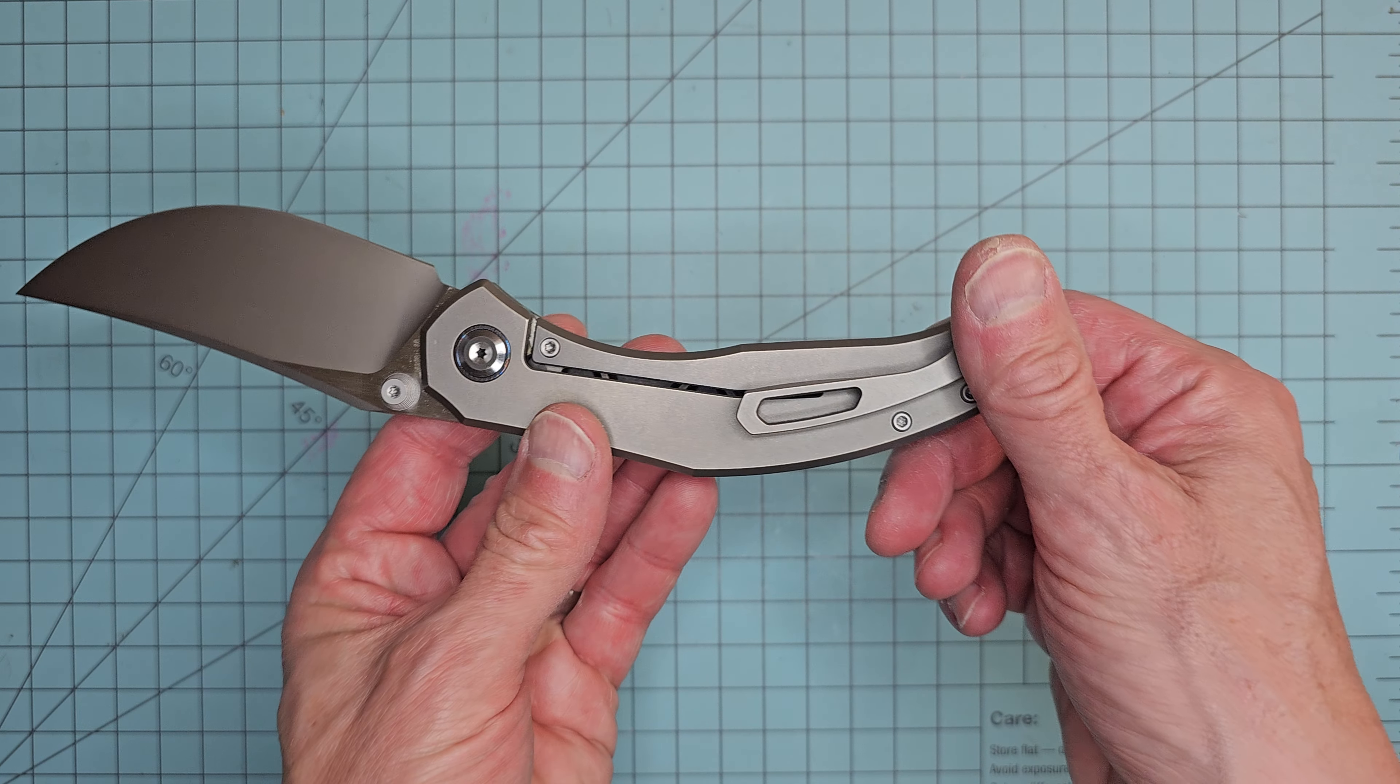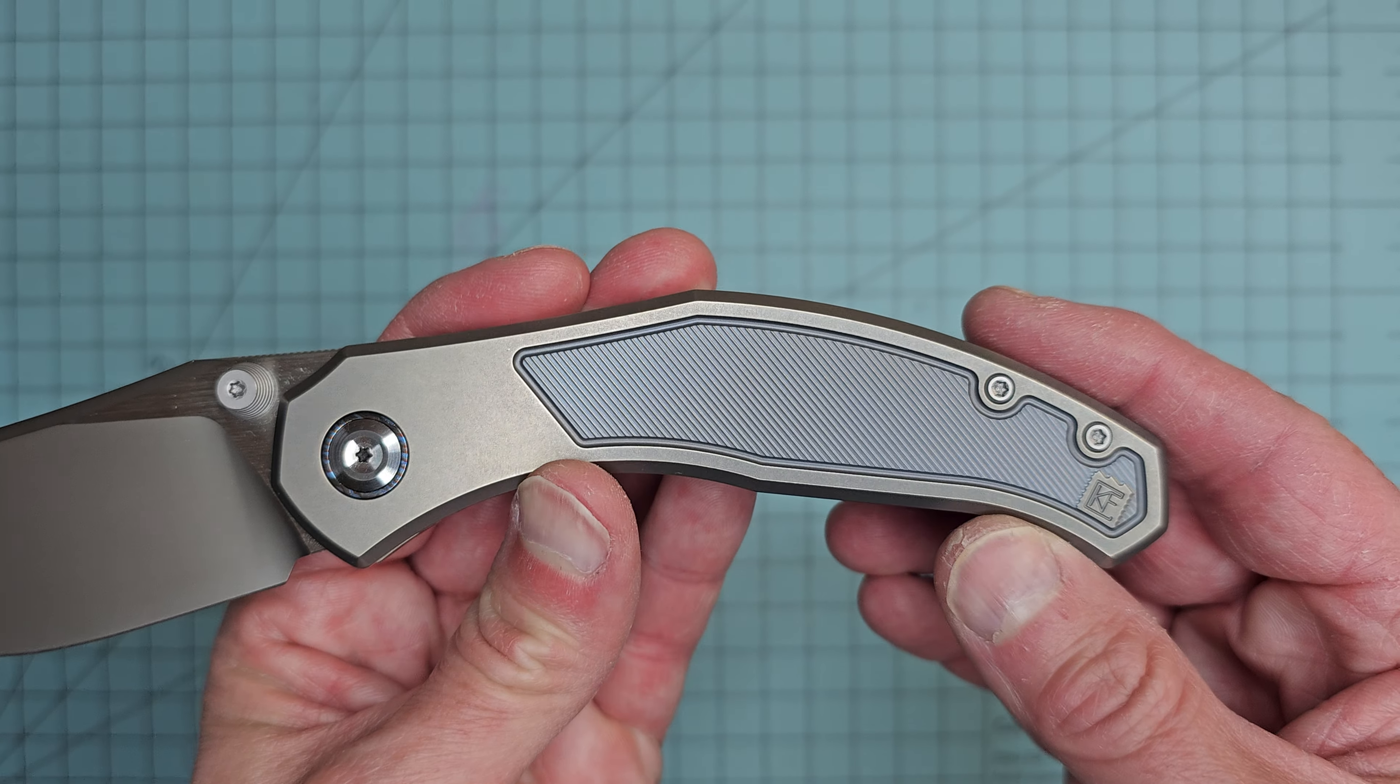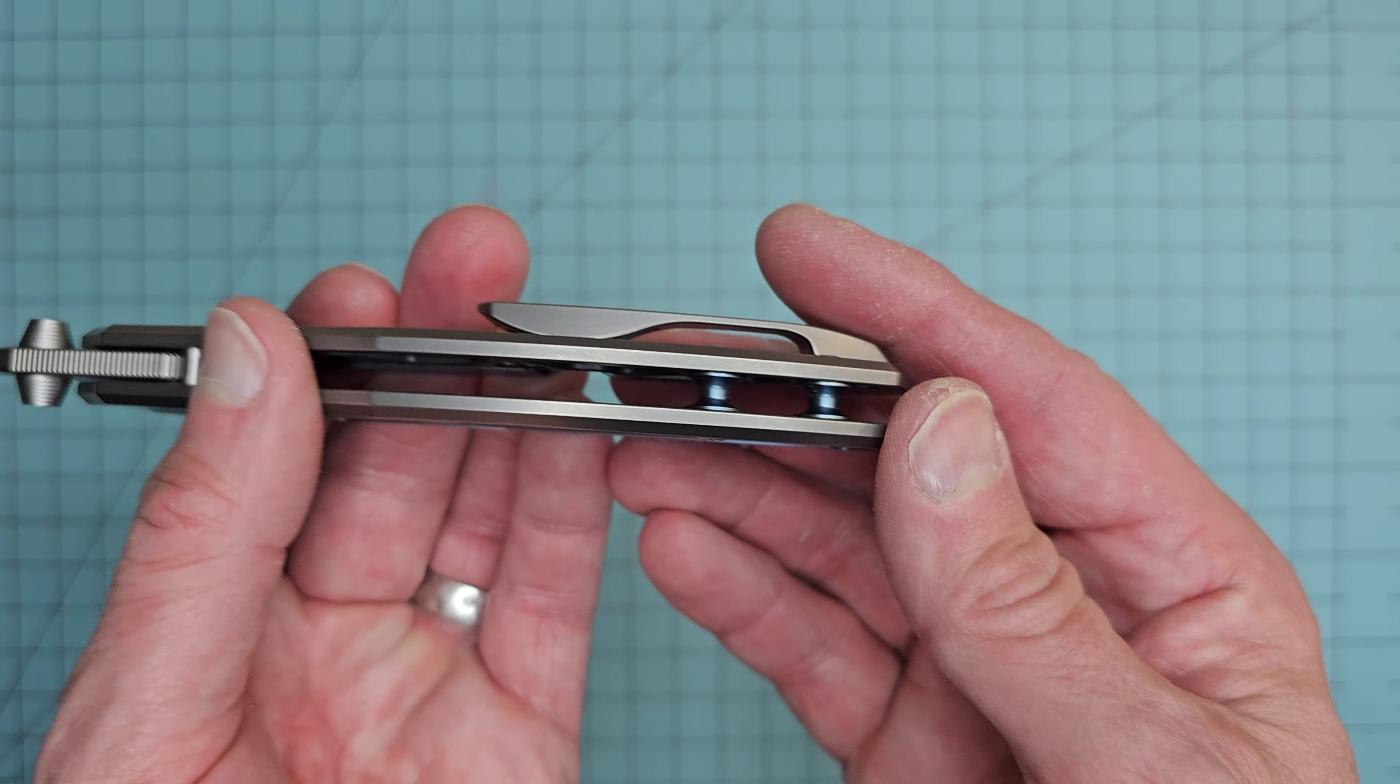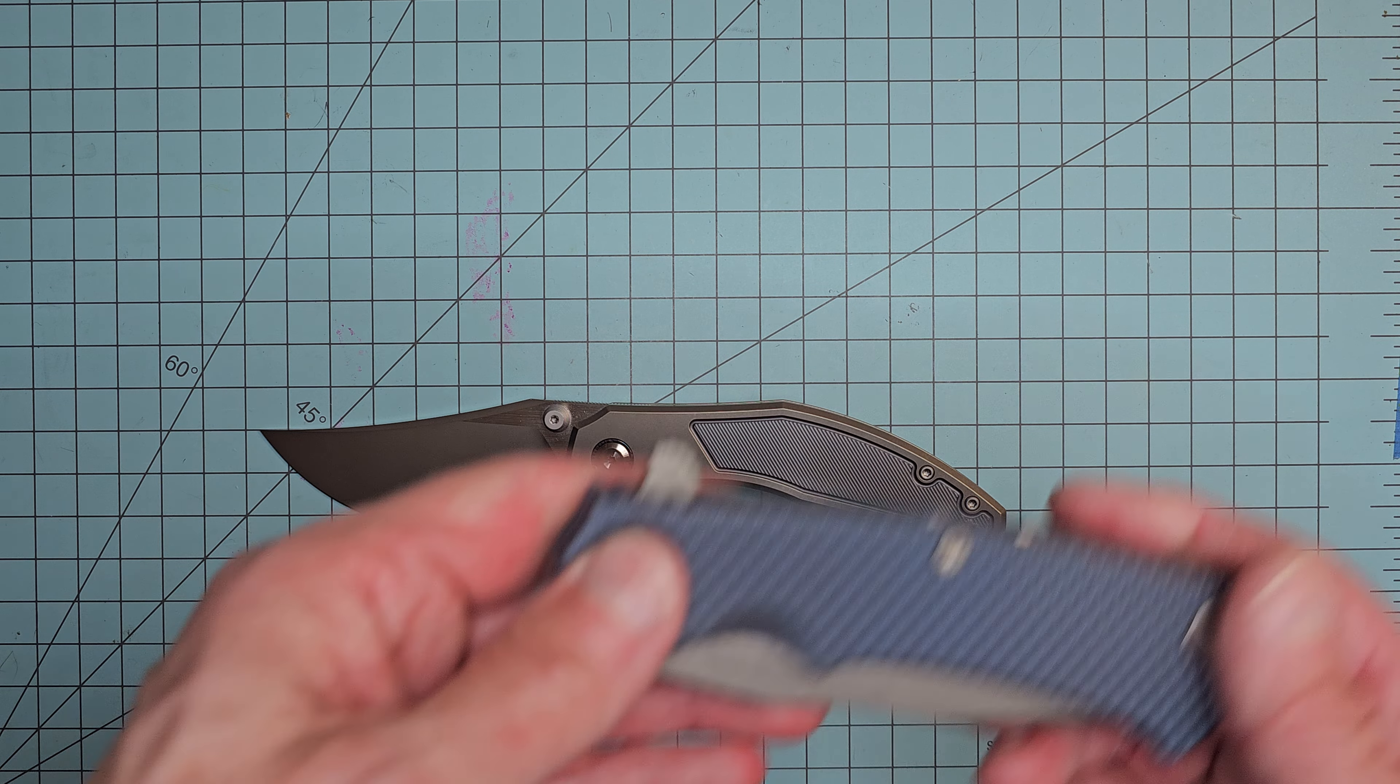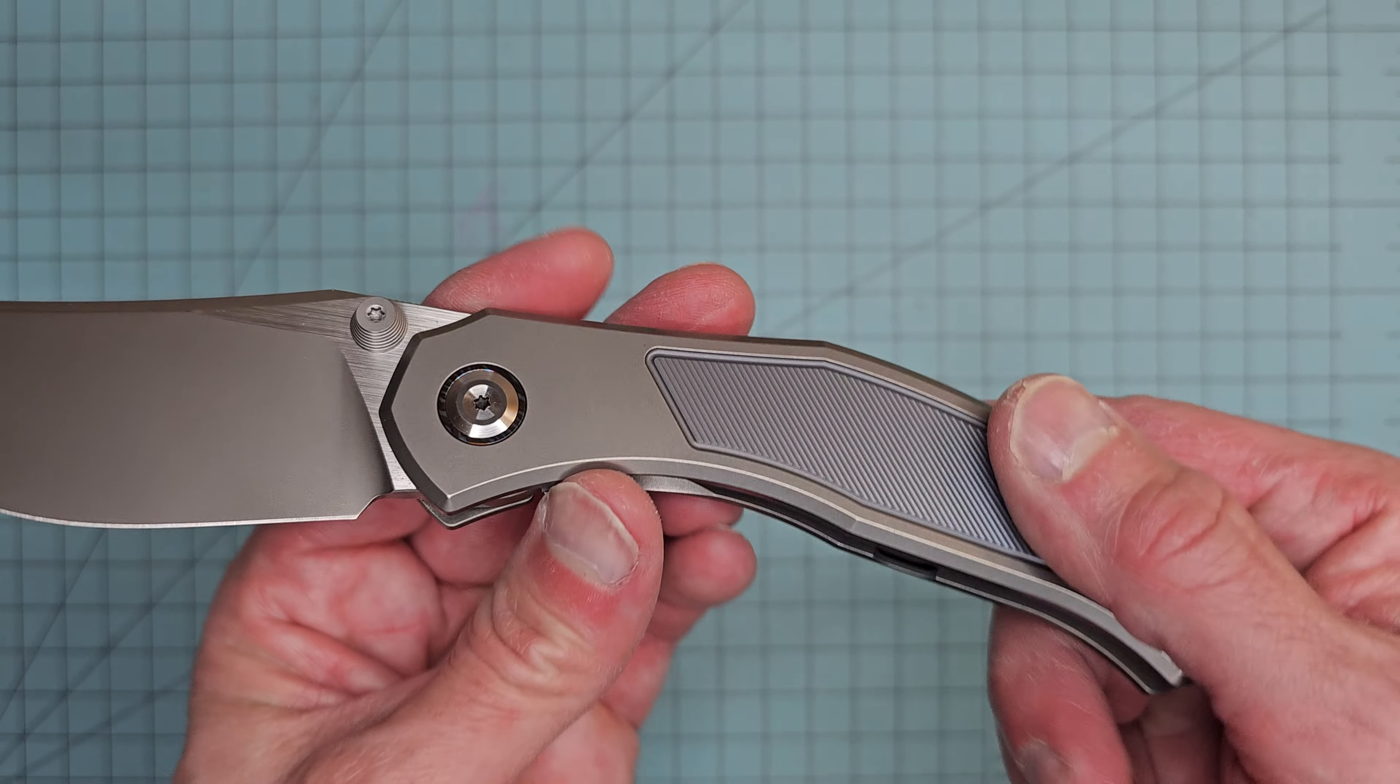Titanium scales, titanium frame lock. No titanium clip. Clip is nice. It's got that nice milling right in there and it's got that blue, subtle blue like a denim color. And then also on the back spacers right there, blue anodized. I'm not normally a big blue guy as you see. But the blue is nice on this.